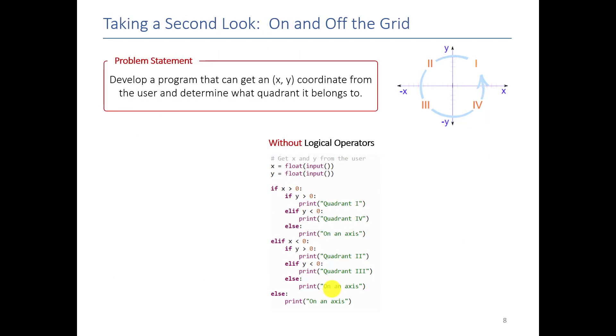So let's go back to the example that we did in the previous video where we wrote some code that told you based off of an X and Y coordinate what quadrant you were in. The way we did it last time was by saying if X is greater than 0 then you went inside the if statement, if Y is greater than 0 you're in this quadrant otherwise if Y is less than 0 then you're in quadrant 4 otherwise you're on an axis. So I want to show you how to take that same exact code and rewrite it using logical operators to make things a little bit easier.